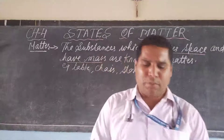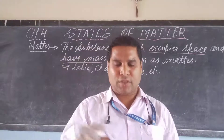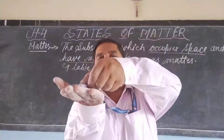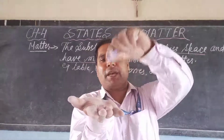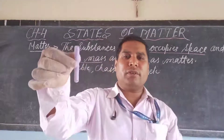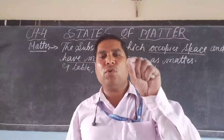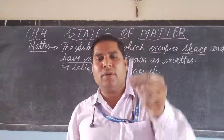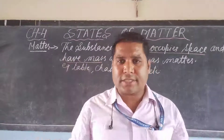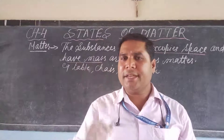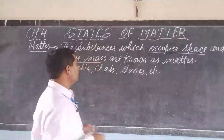Let us understand with the help of an example. Dear students, pay attention — this is a chalk. When we keep it on a plain surface, it occupies space. And when you put this particular chalk on a beam balance, it shows some mass — 100 gram, 200 gram, or 400 gram. So all those substances which occupy space and have mass are known as matter.